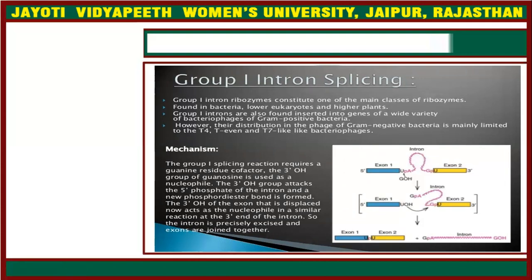In the mechanism, there is a 3-hydroxyl group that attacks the 5-phosphate group of the intron, and a new phosphodiester bond is formed. The 3-hydroxyl group of the intron that is displaced now acts as the nucleophile in a similar reaction. In this way, exon 1 and exon 2 molecules are joined together.